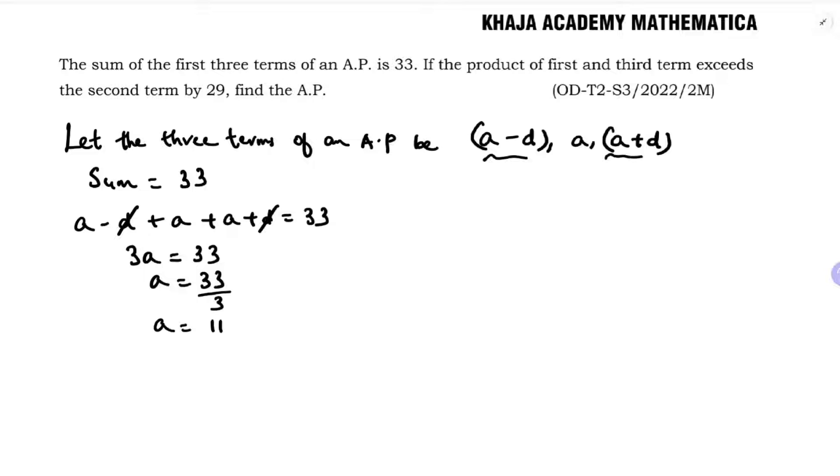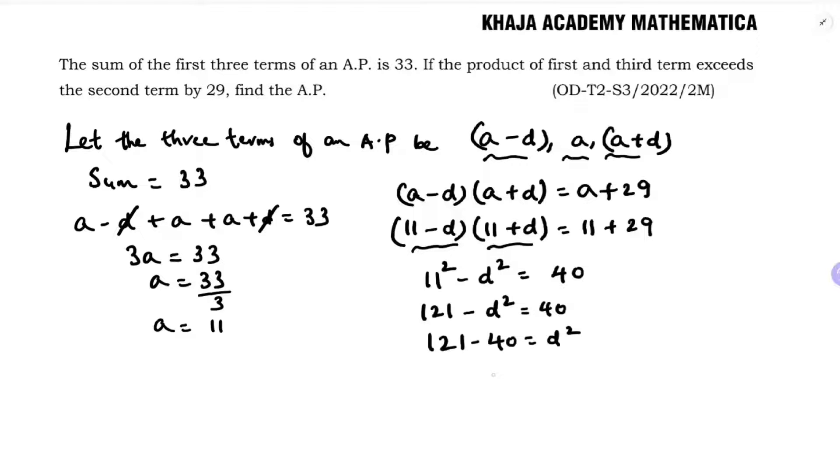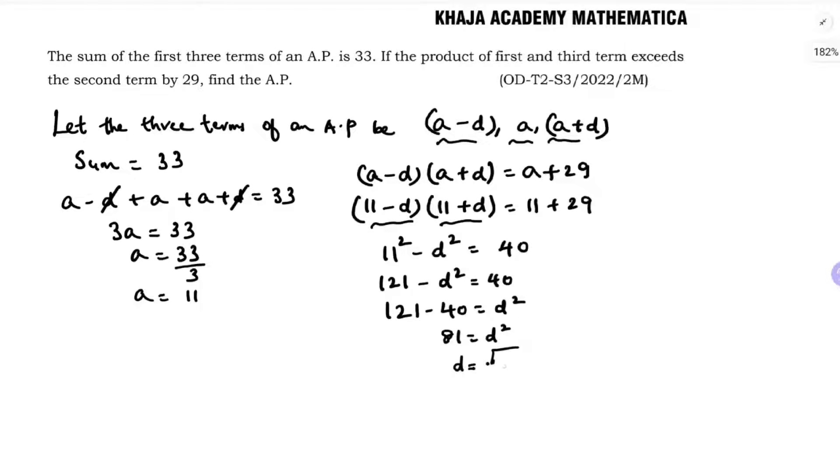Now they told the product of first and third term exceeds the second term by 29. So product of a minus d into a plus d equals a plus 29. Substituting, 11 minus d into 11 plus d equals 11 plus 29. Using a squared minus b squared, 11 squared minus d squared equals 40. 121 minus d squared equals 40, so 121 minus 40 equals d squared. 81 equals d squared, so d equals plus or minus 9.